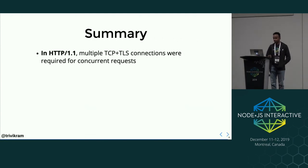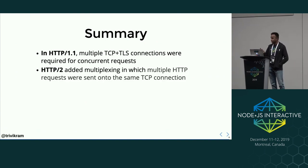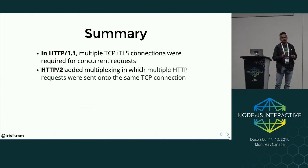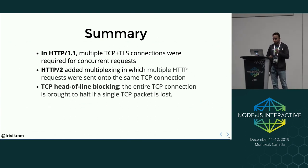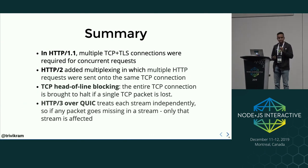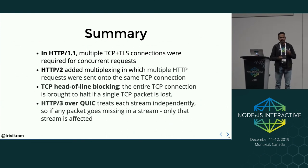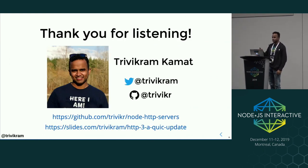Let's summarize what we learned. In HTTP/1.1, multiple TCP plus TLS connections were required for concurrent requests. In HTTP/2, multiplexing allowed multiple HTTP requests to be sent on the same TCP connection. TCP head-of-line blocking brings the entire TCP connection to a halt if a single packet is lost. And HTTP/3 over QUIC treats each stream independently, so if any packet goes missing in a stream, only that stream is affected. All the code shown is available on GitHub, and the slides are available there too.